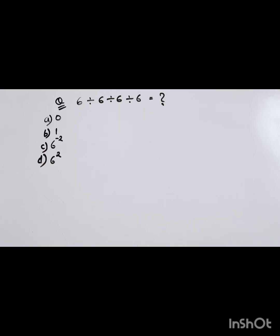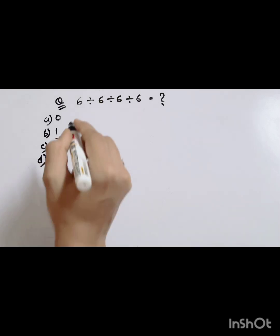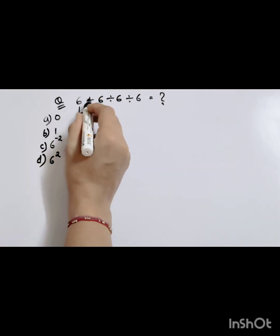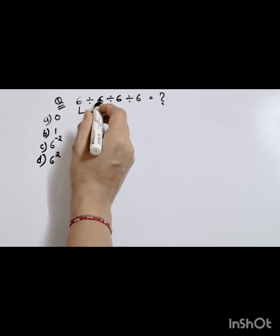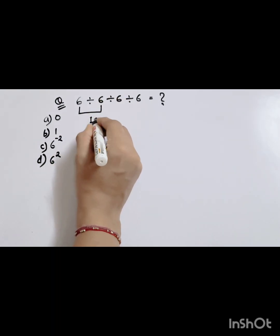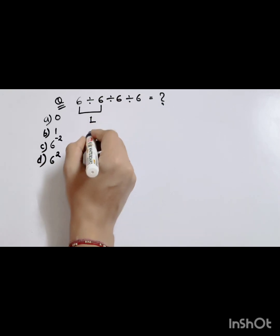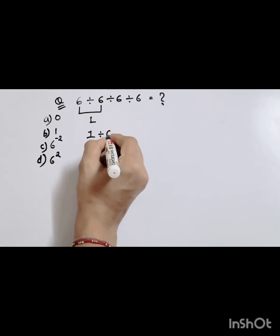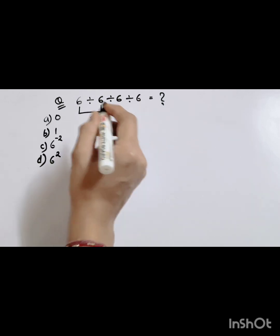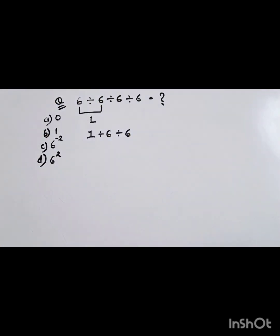We will start from the left side. First we'll divide: 6 divided by 6 is 1. So now we have 1 divided by 6 divided by 6.